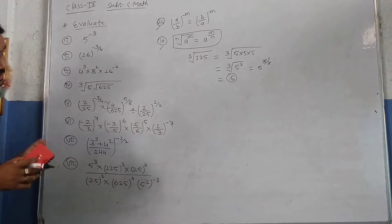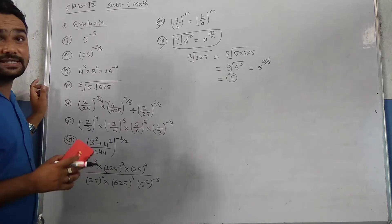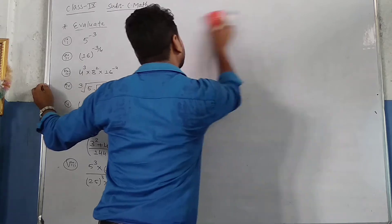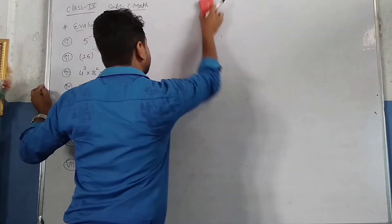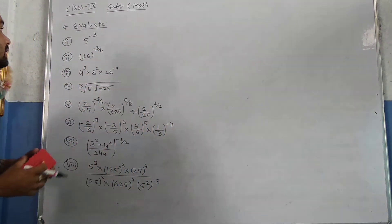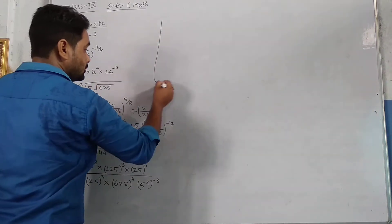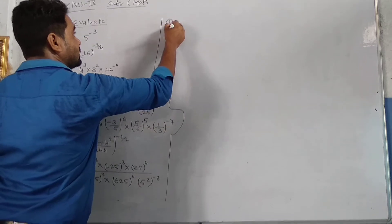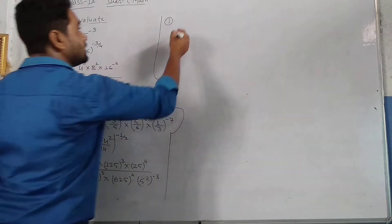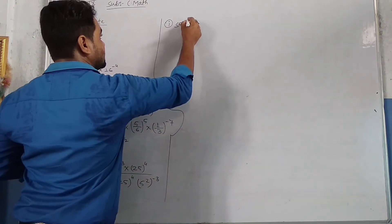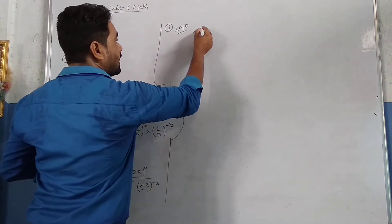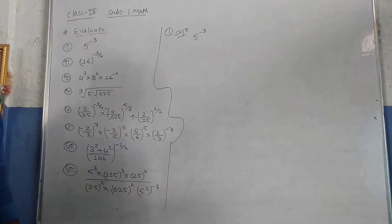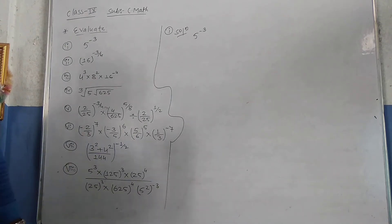I have written the questions and we will discuss them one by one. This law is also important in class 10, so it is very important from the exam point of view. For the first question: 5 power minus 3 is there. Now compare that — we have to know which law we are going to apply here. The base is 5 and the power is minus 3.